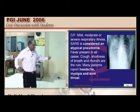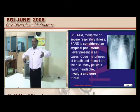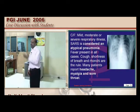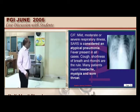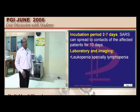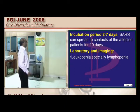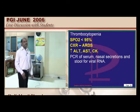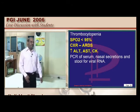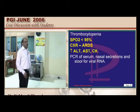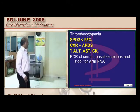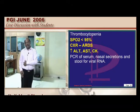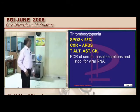SARS presents like Pneumocystis carinii with interstitial pneumonia and type 1 respiratory failure. Incubation period is 2-7 days; initial features include headache, myalgia, and sore throat. Leukopenia occurs and oxygen saturation falls below 95%. Liver enzymes become elevated. Ribavirin is not effective unlike in bronchiolitis. Steroids are not effective in SARS.